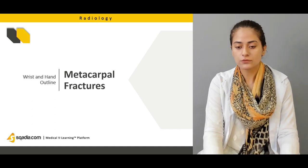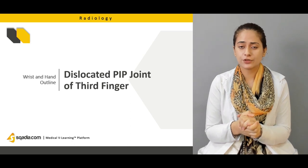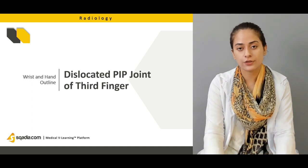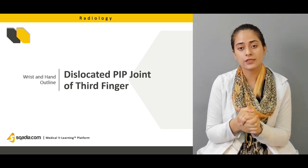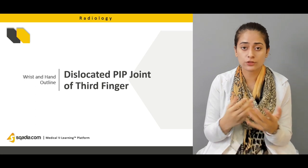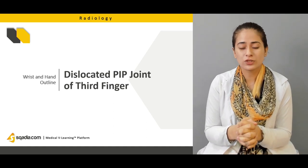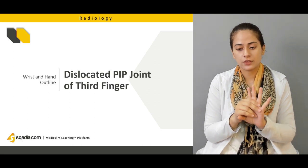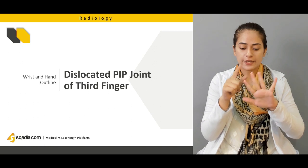Then we will talk about dislocated PIP joint. PIP stands for proximal interphalangeal joint. Dislocation is not very common but is seen due to trauma or falls. We'll see how dislocation appears on radiographs and its consequences. Sometimes this dislocation can be reduced with closed reduction — placed back to its anatomical position without surgical intervention. But mostly when PIP or small joints are involved, surgical intervention is needed. If seen, it's mostly seen in the second and third finger.